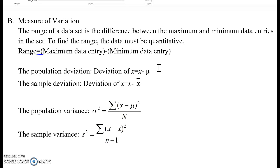Therefore, the population deviation equals x each data minus population mean mu. Then, the sample deviation is x minus x-bar because x-bar indicates sample mean as well.